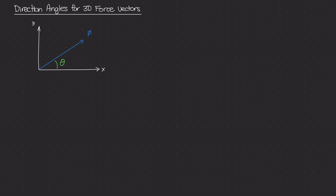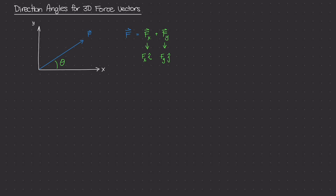We usually denoted the angle as theta — the angle that this force vector F makes with the horizontal x-axis. We could write this force vector F in terms of its components: the F_x vector along the x-axis plus the F_y vector along the y-axis. For both components, we could rewrite them as the scalar quantity of F_x times the unit vector i, plus the scalar quantity of F_y times the unit vector j.